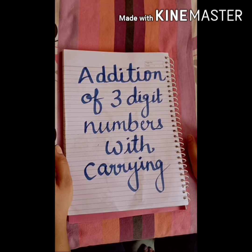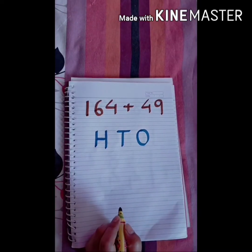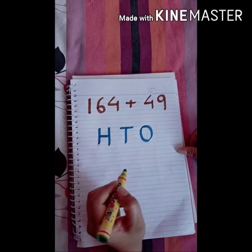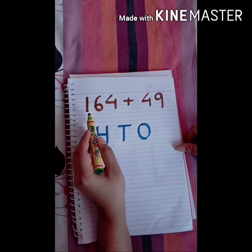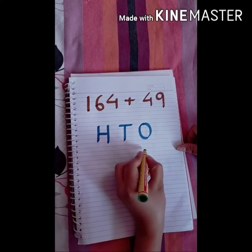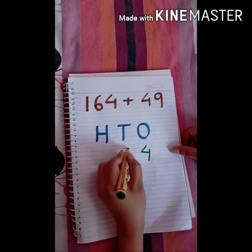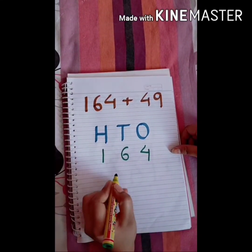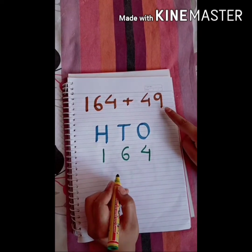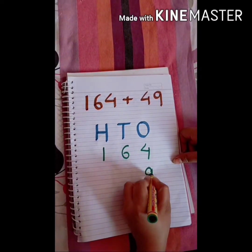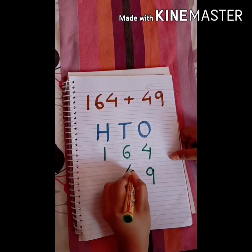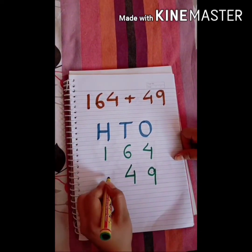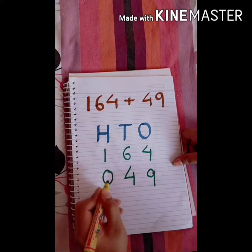Let's start with an example. The first step is to place the numbers according to their position. In 164, there are 4 ones, 6 tens, and 1 hundred. In 49, there are 9 ones, 4 tens, and nothing in the hundreds place, so we put zero there.